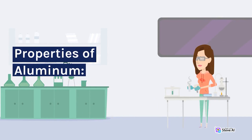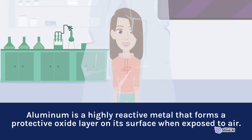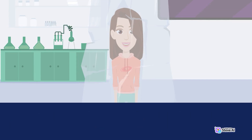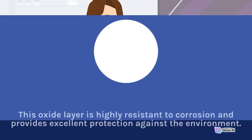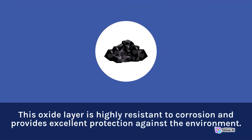Properties of Aluminum. Aluminum is a highly reactive metal that forms a protective oxide layer on its surface when exposed to air. This oxide layer is highly resistant to corrosion and provides excellent protection against the environment.